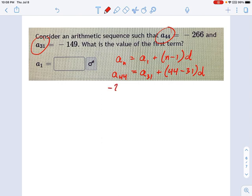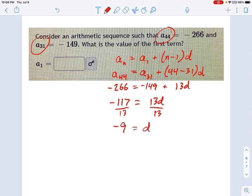And look what happens. This is great. Now we can just figure out what d is, because I've got negative 266 over here, I've got negative 149 over here, and I know what 44 minus 31 is. It's 13, 13d. So we can solve this. It's just a single equation. And here I am without my calculator. I could probably do this math, but people don't like seeing me make mistakes all over the place. Negative 117 equals 13d, which means divide each side by 13. And that looks like negative 9 to me. So negative 9 equals d.